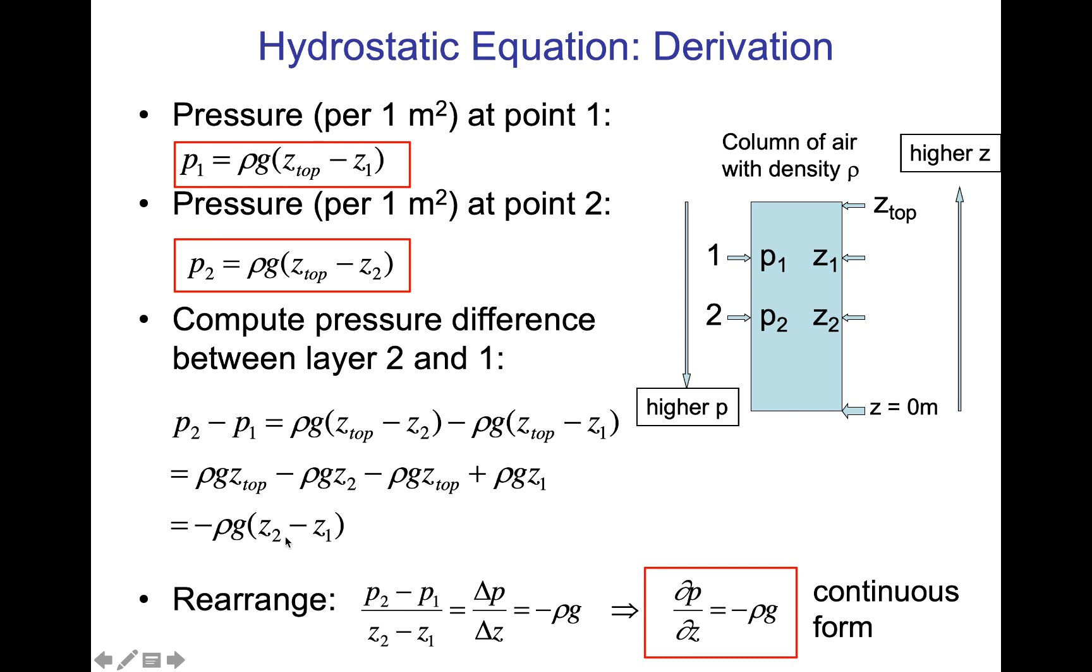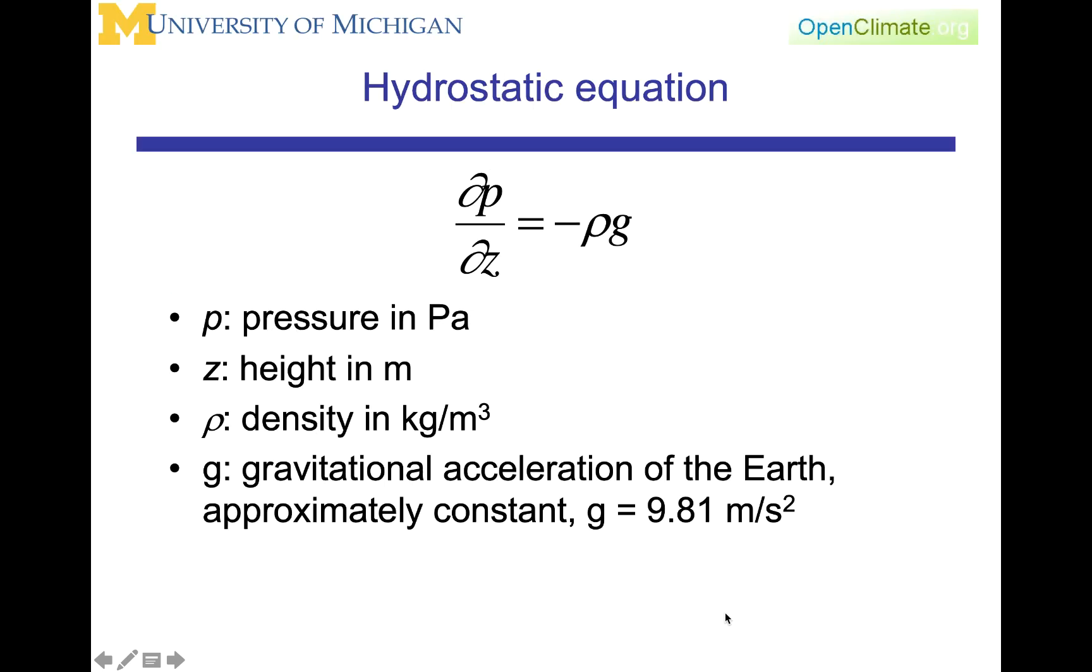We rearrange by dividing P2 minus P1 by Z2 minus Z1, leaving these finite differences on the left side equal to minus rho times gravity. As we take the limit of delta Z and delta P to zero, dP dZ equals minus rho G. This is the hydrostatic relationship, where P is pressure, Z is height in meters, rho is density in kilograms per meter cubed, and G is gravitational acceleration, 9.81 meters per second squared.